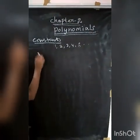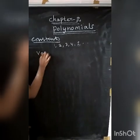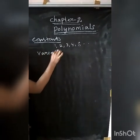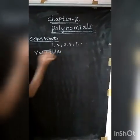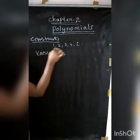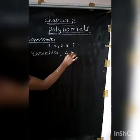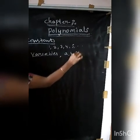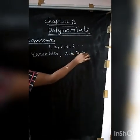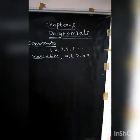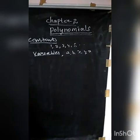And variables. Variables are alphabets — A, B, C, X, Y, Z, etc. Those are the variables.